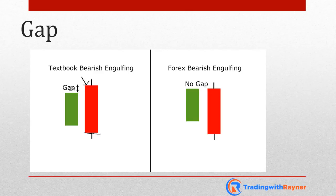What you need to do is remove the gap portion and slightly tweak the definition of bearish engulfing for the Forex market. So for a Forex bearish engulfing, it would pretty much open where the previous candle closed and then close lower, engulfing the previous candle. This gap element needs to be taken into consideration when trading Forex markets or any markets that are open for almost 24 hours a day.